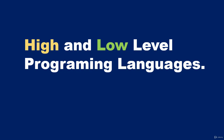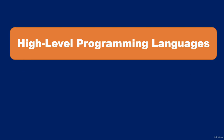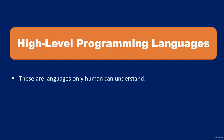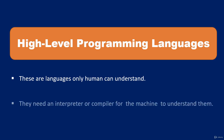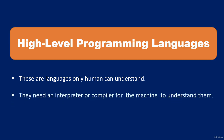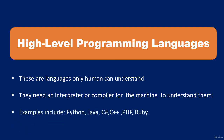In this video I'll introduce you to high and low level programming languages. High-level languages are languages only humans can understand — computers can't understand them without a compiler or interpreter. Examples include Python, Java, C#, C++, PHP, Ruby, and many others.